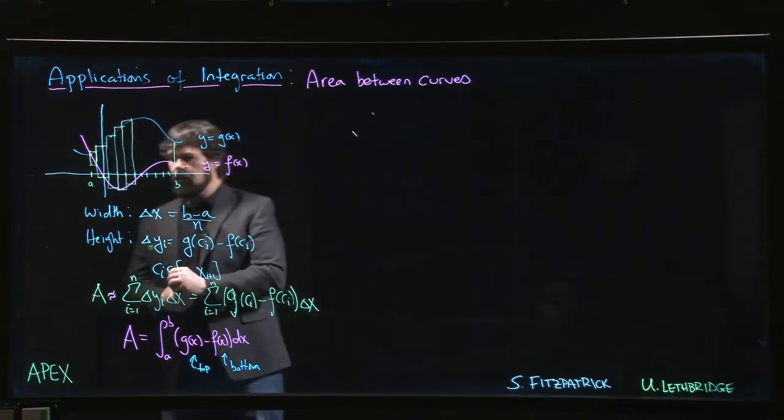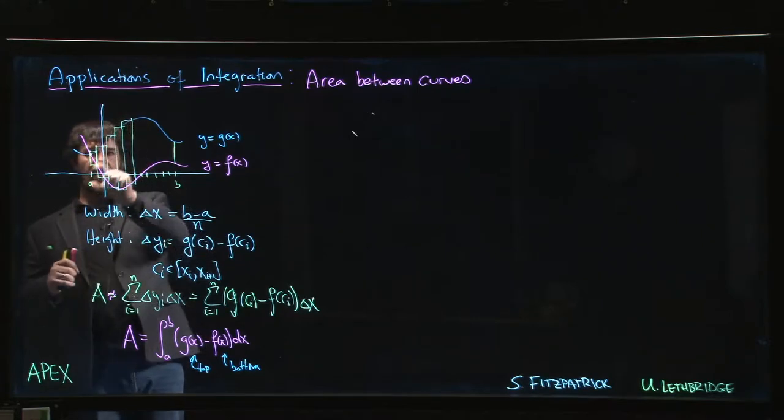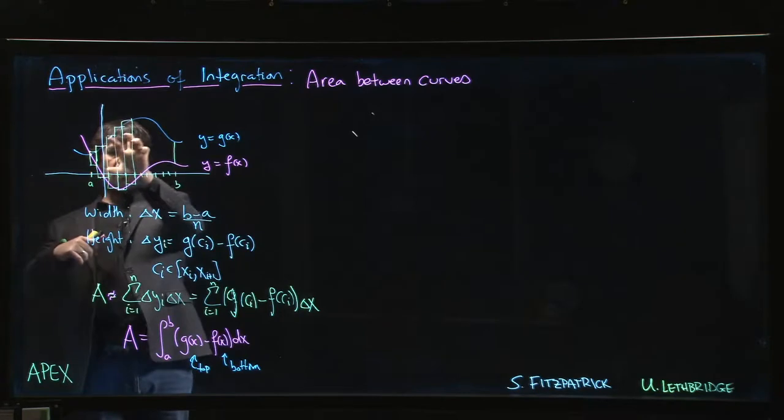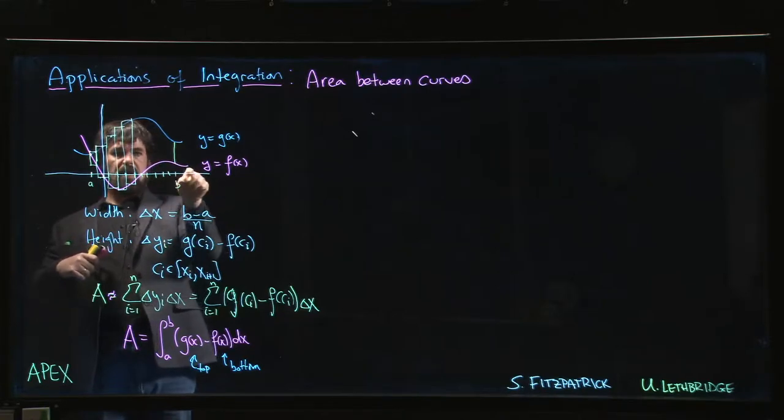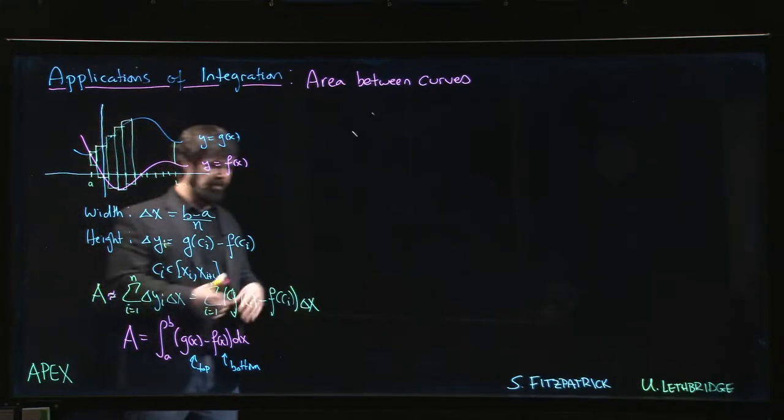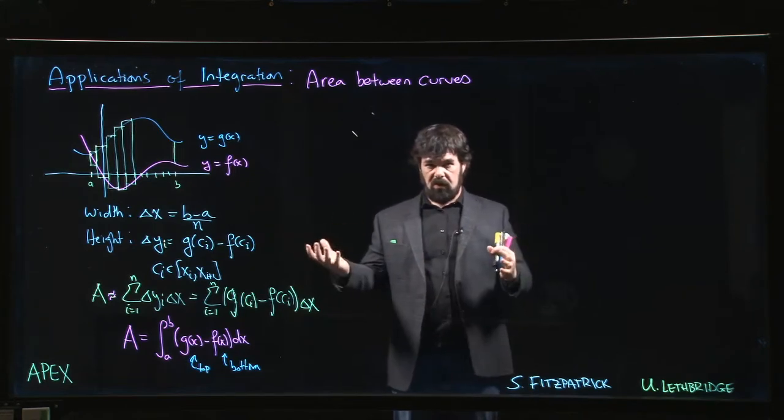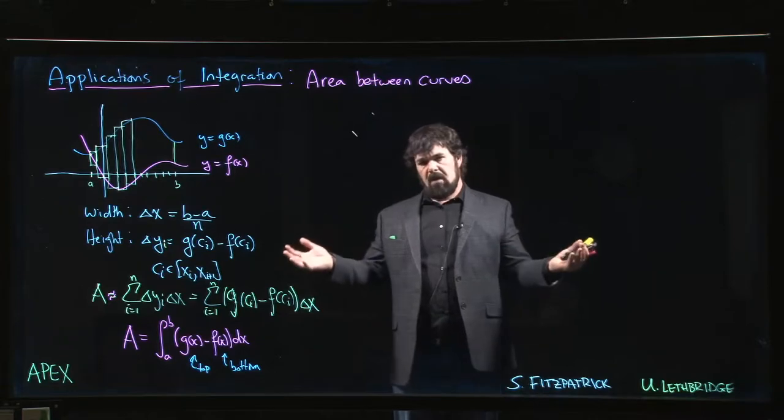Another way you can think about it, if you don't like this Riemann sum approach, is: if you calculated the area under g of x, that would give you this area here. But then you don't want to include the area that's below the curve here, but you want to add that bit on. You can work out that yeah, this does make sense. Area between curves - essentially what you're going to do is the difference of the two integrals, the integral of g minus the integral of f.